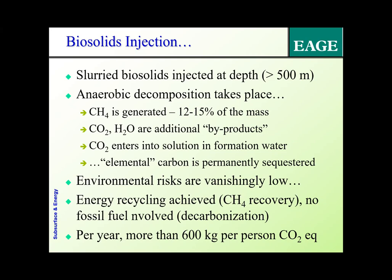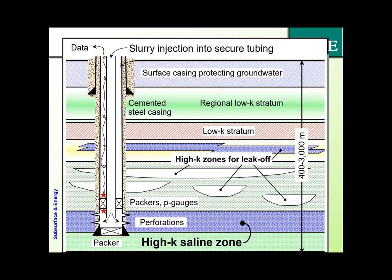Furthermore, the process is cheaper than treatment systems in many big cities. In the Houston area, you could dispose of all of Houston's biosolid waste by injecting it 1,200 to 1,500 meters underground, and potentially recover the methane for energy recycling. If you convert the carbon to CO₂ equivalent, that's 600 kilograms of CO₂ sequestered per person per year — multiply that by 5 million people and it adds up as an ongoing process that continues to sequester carbon.